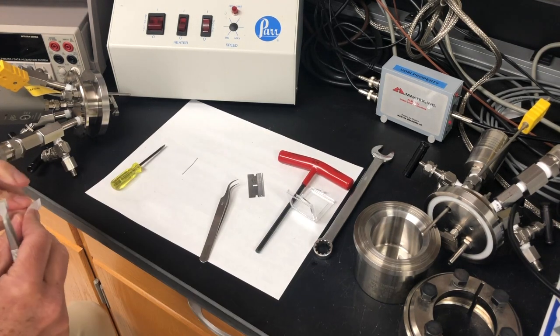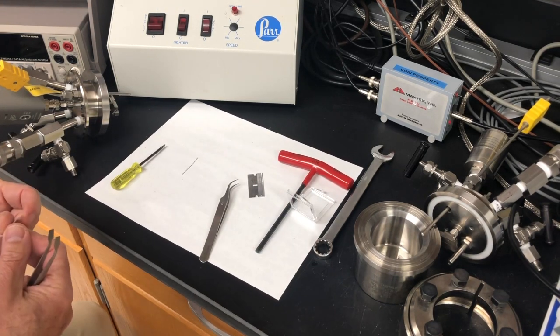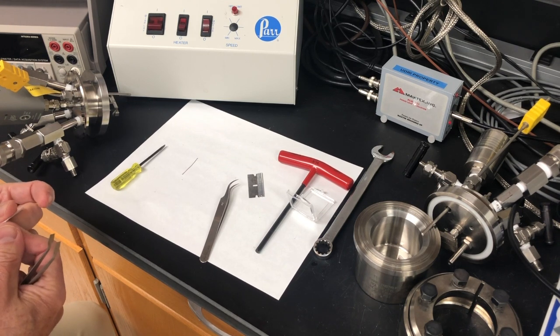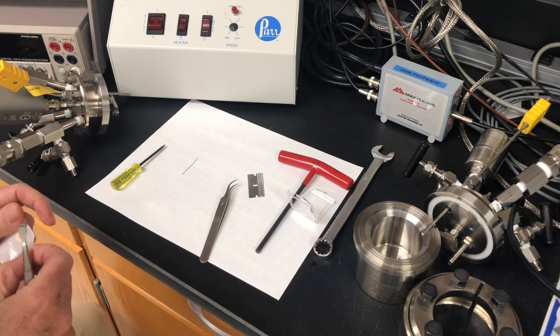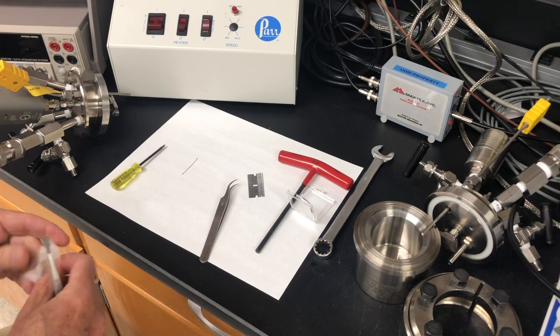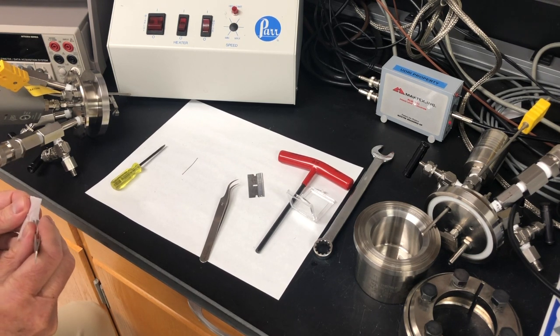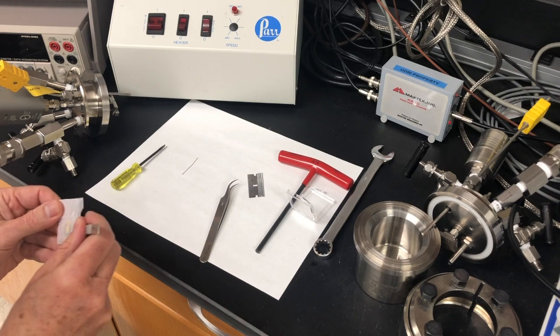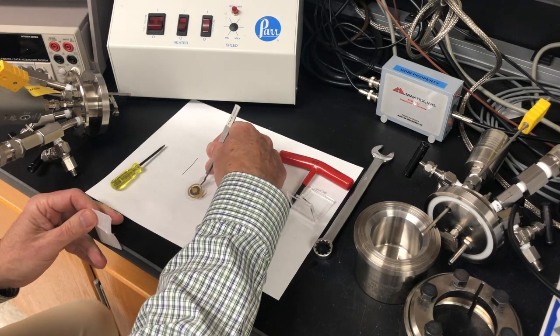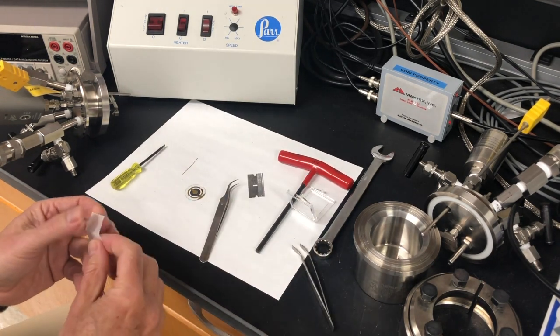And now we take out a brand new QCM crystal using tweezers, making sure not to touch the crystal with our hands. We place the crystal with the small round electrode facing up. Notice that the wraparound electrode is on the right and the small round electrode faces up.